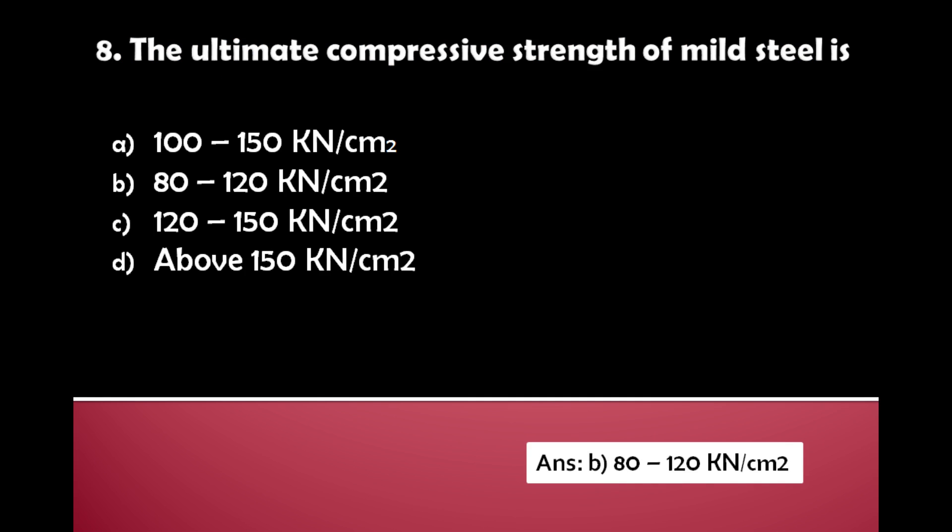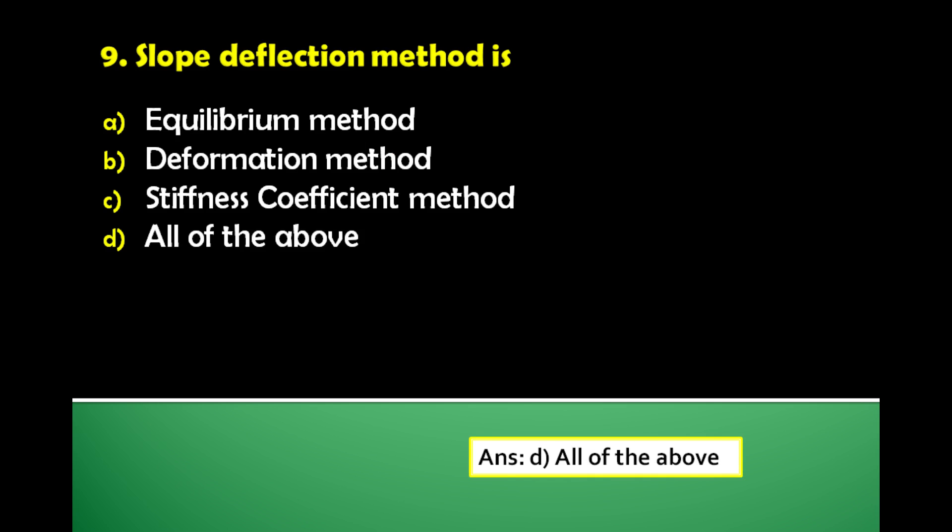The ultimate compressive strength of mild steel. The answer is: the ultimate compressive strength of mild steel is between 80 to 120 kilonewton per centimeter square.